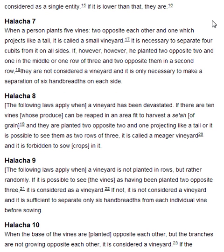Halakha 7. When a person plants five vines, two opposite each other and one which projects like a tail, it is called a small vineyard. It is necessary to separate four cubits from it on all sides. If, however, he planted two opposite two and one in the middle, or one row of three and two opposite them in a second row, they are not considered a vineyard, and it is only necessary to make a separation of six handbreadths on each side.